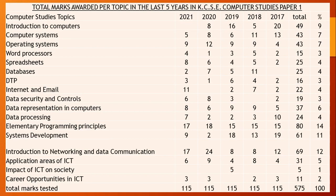In KCSE Computer Studies paper 1, we have the following topics: introduction to computers, computer systems, OS, word processors, spreadsheet, database, DTP, internet and email, data security and control, data representation, data processing, elementary programming principles, and system development. These topics have been arranged according to form 1, form 2, form 3, and form 4.